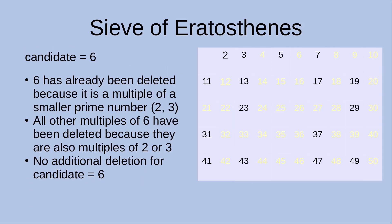Now let us see the case when the candidate becomes 6. This number has already been deleted because it is a multiple of a smaller prime number, which can be 2 or 3 — number 6 is already shown in yellow, meaning it has already been deleted. It follows that all other multiples of 6 have already been deleted because they are also multiples of 2 or 3. So we don't need to do any further deletion for this round.